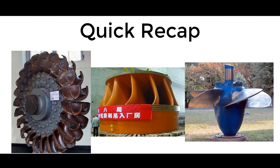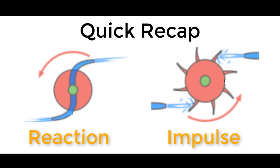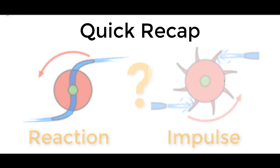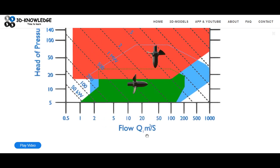We've discussed the main types of hydro turbine and know they fall into two broad categories: impulse and reaction. Now we're going to look at why you have the different designs and when you'll use them. The graph in front of us is titled 'Hydro Turbine Design.' On the left-hand side we have head of pressure going from zero up to 2000, and on the x-axis we have flow rate in meters cubed per second.